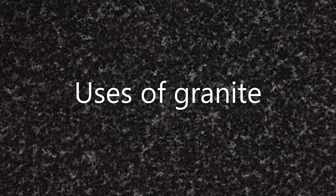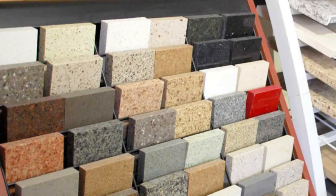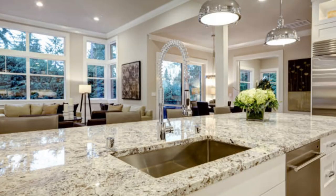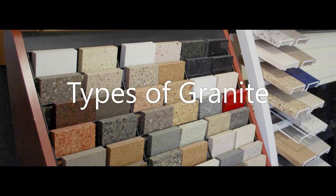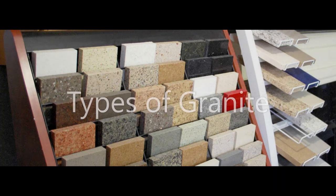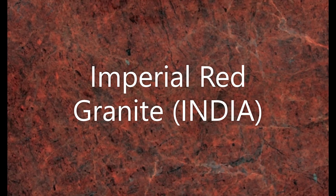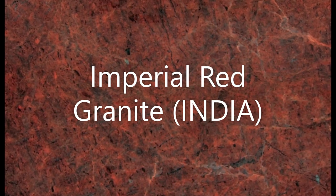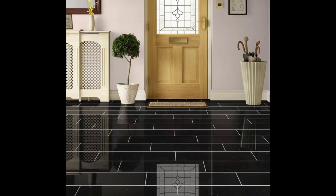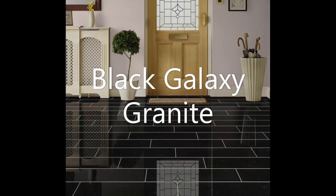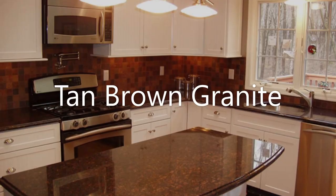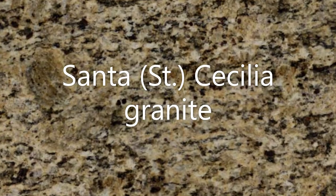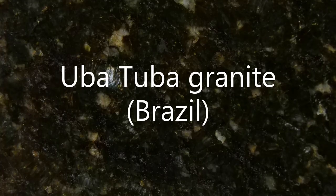Granite is used in construction for everything from basic building to beautiful polished countertops. The most common types of granite used in building and construction industries include: Imperial red granite, a deep red grain with black, white and gray, quarried in India; Black galaxy granite, one of the best black granites from India; Green pearl granite; White galaxy granite; Tan brown granite; Cecilia granite; and Ubatuba granite, mined in Brazil, which takes on a dark color due to an abundance of mica.